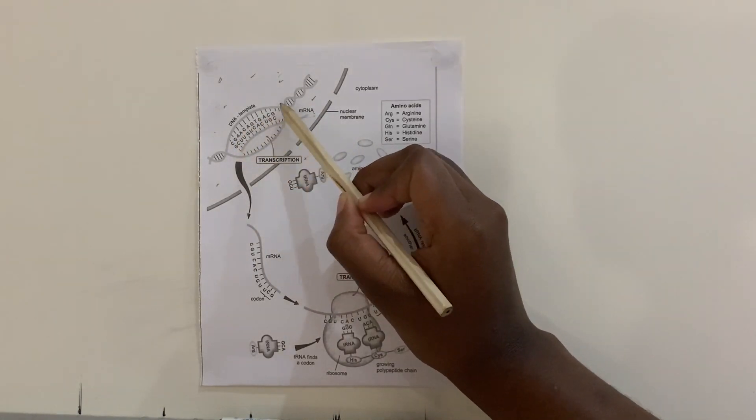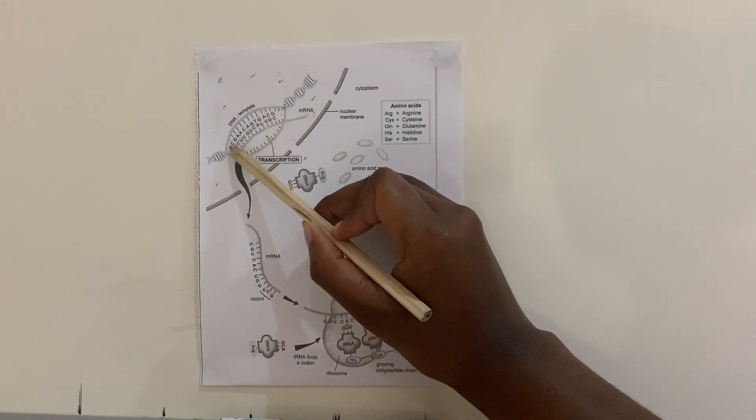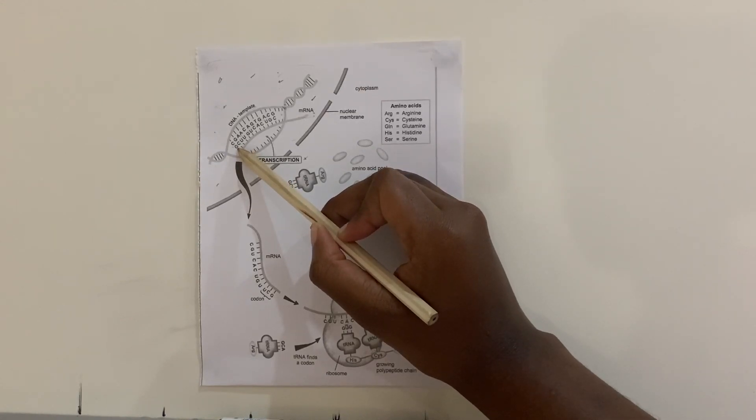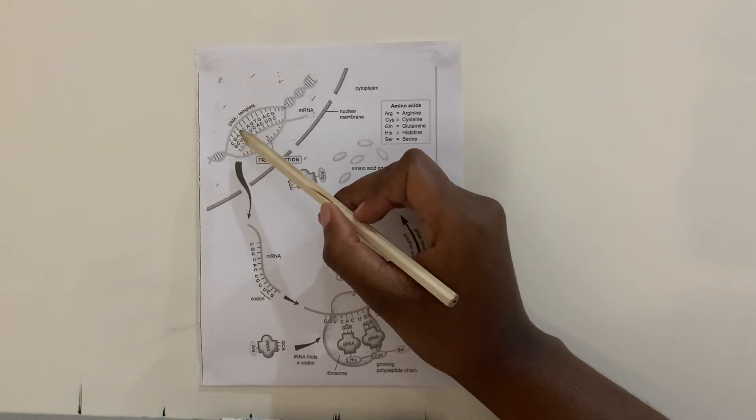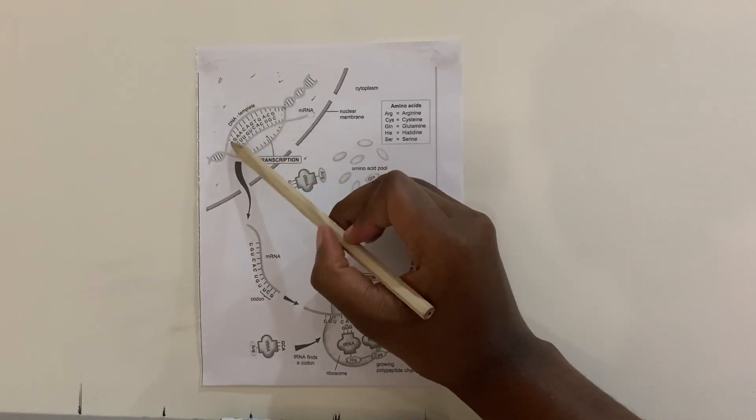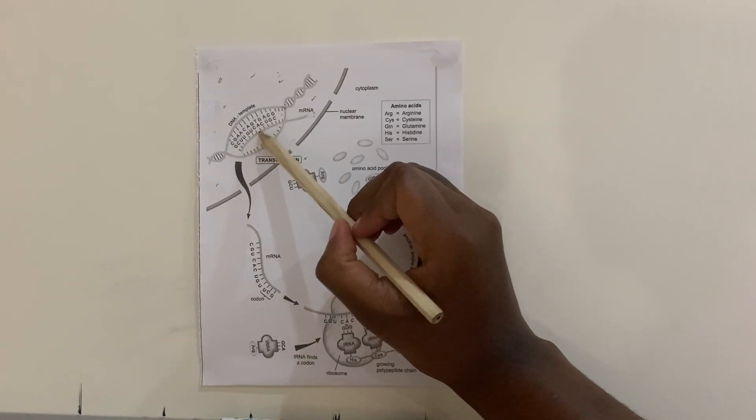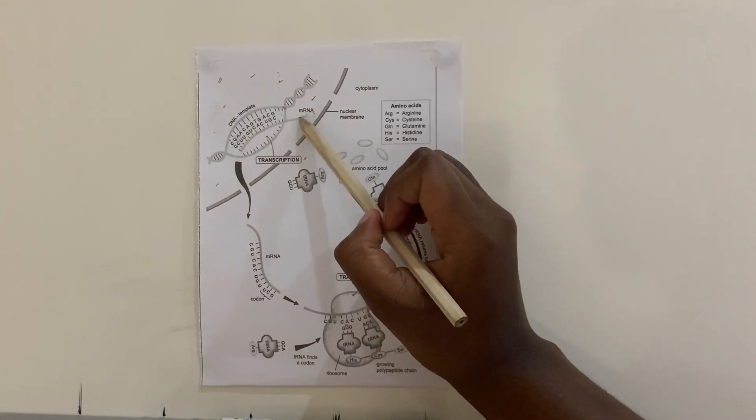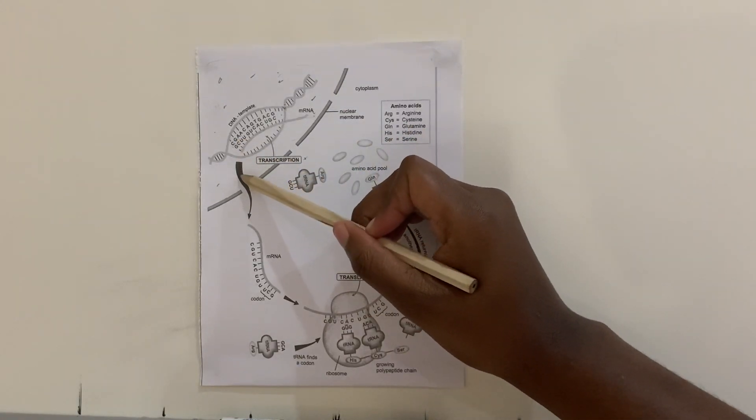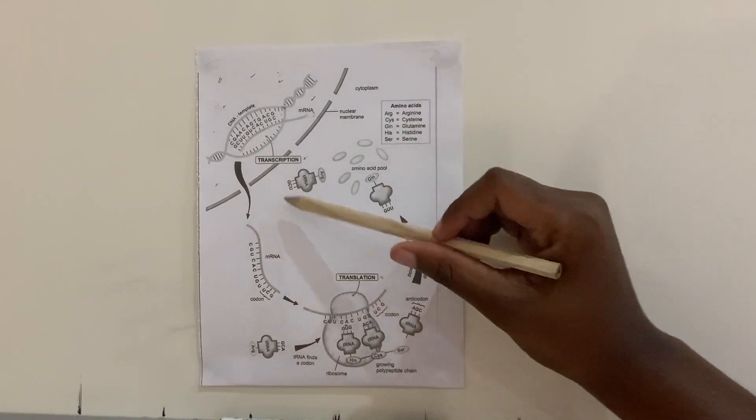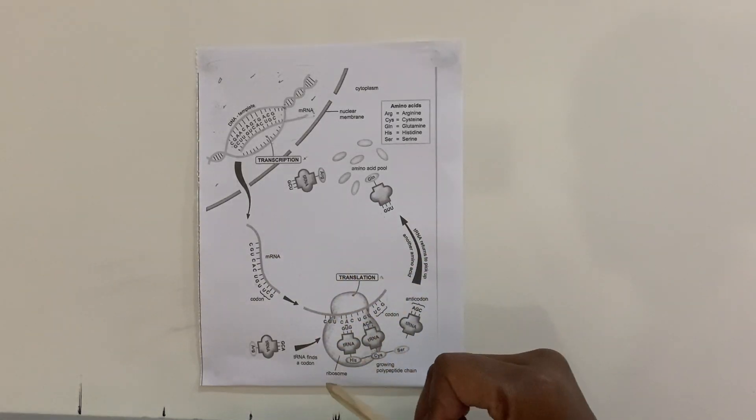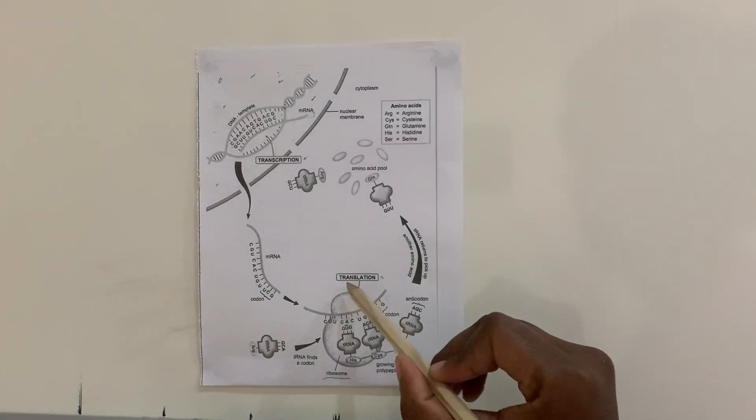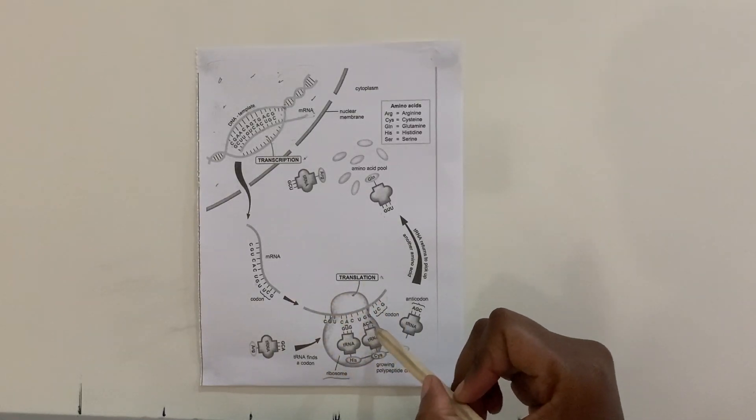So here it was C for cytosine, and then the complementary nitrogenous base that bonded was G, similarly to DNA replication. So that process is going to happen, and then once the mRNA strand has been formed, it leaves the nucleus, as you can see with this arrow, through the nuclear pore, passes through the cytoplasm, and attaches itself to the ribosome.